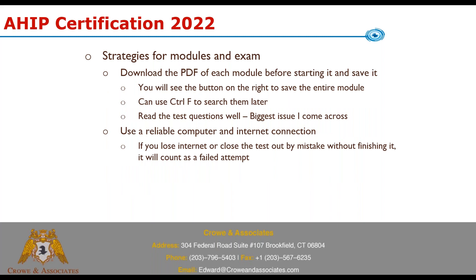As mentioned before, download the PDF of each module — even if you're not taking modules one, two, and three, just go in and download it. Save them on your desktop. When you're taking the test, you can use Control-F to find the term you need to get the answer — it's completely an open book test, so you're allowed to do that. The biggest issue I see with people who have trouble is just not reading the question carefully. We're all in such a hurry to get through it — make sure it's not a double negative or 'all but these things.'